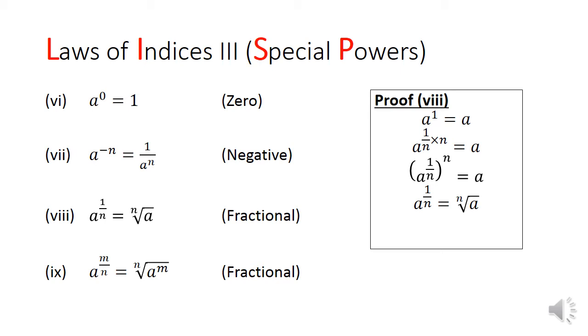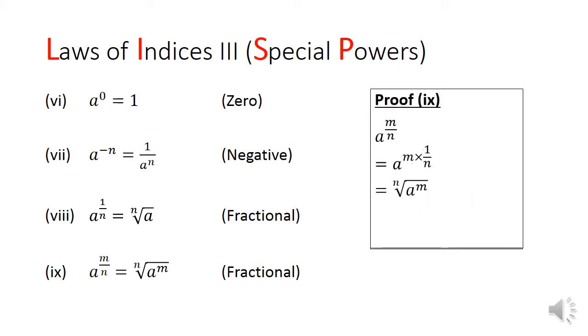In law 9, it states that if a power is raised by a fraction like m over n, we simply take the nth root of the mth power of a. The proof is simply a combination of law 3 and law 8.